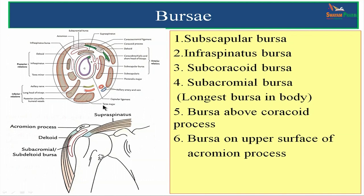Bursae are small pockets around the joint acting as shock-absorbing structures. The shoulder joint is supported by six bursae: the subscapular bursa, infraspinatus bursa, subcoracoid bursa, subacromial bursa (which is the longest bursa in the body), a bursa above the coracoid process, and a bursa on the upper surface of the acromial process. The subacromial bursa — also known as the subdeltoid bursa — is the longest bursa in the body and can be seen in this image.